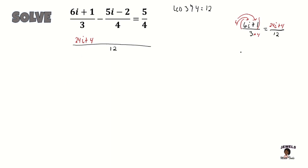Now let's look at our next term, which is (5i − 2) all over 4. We're also taking that minus sign in front of it with this term as well — do not leave off the sign that's in front. Because there is a minus or negative sign in front of this term, I'm going to take that along with the term, so that when I apply my distribution with my 3, I also apply that minus sign along with it, applying two steps in one.